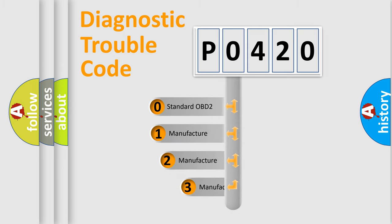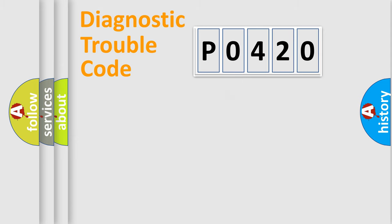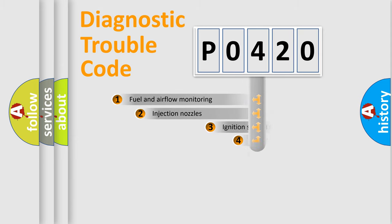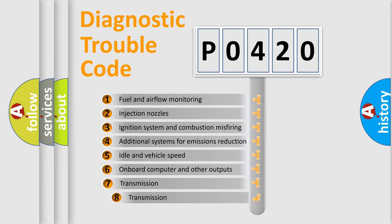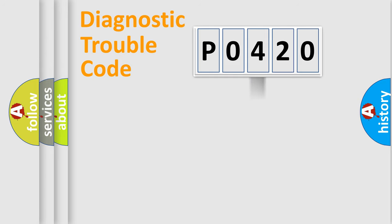If the second character is expressed as zero, it is a standardized error. In the case of numbers 1, 2, or 3, it is a manufacturer-specific expression of the car-specific error. The third character specifies a subset of errors.